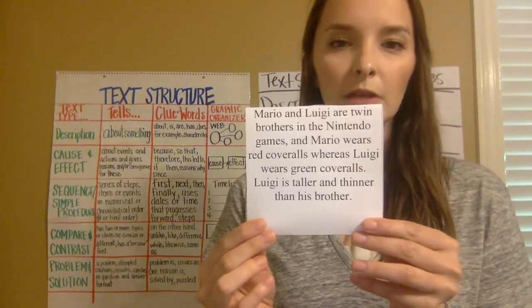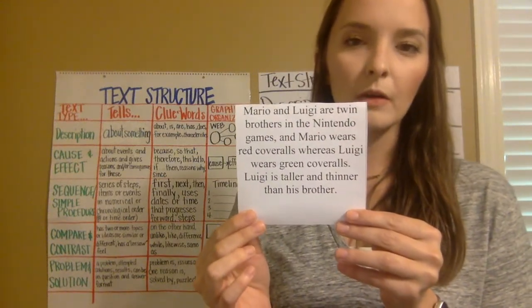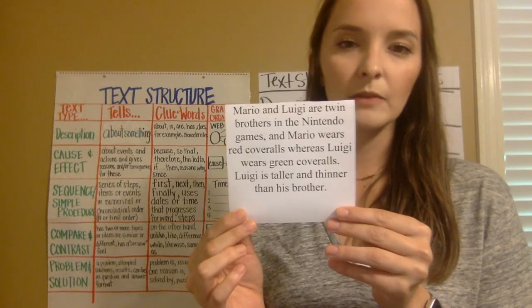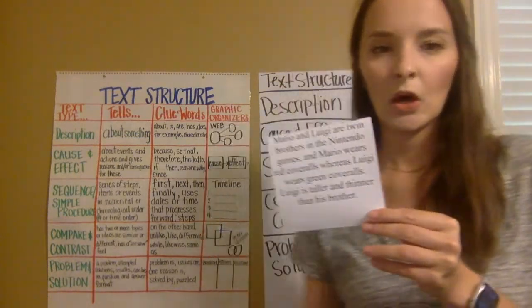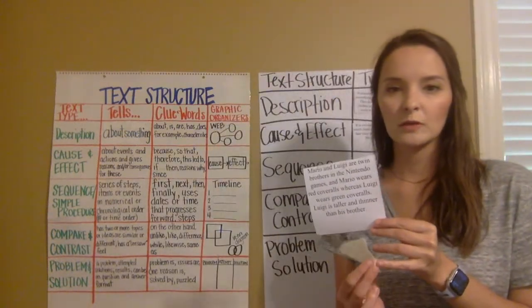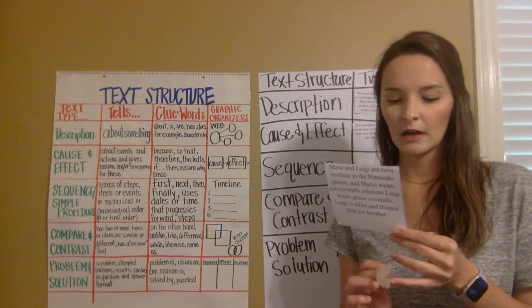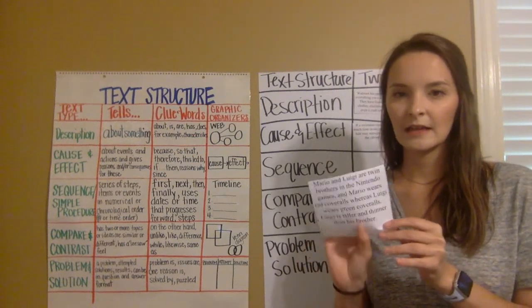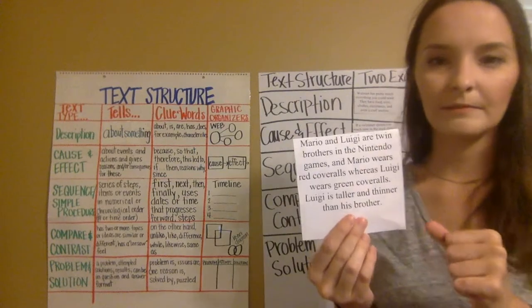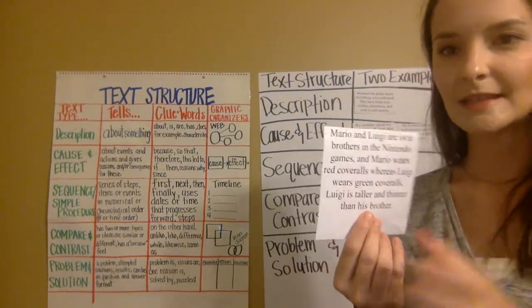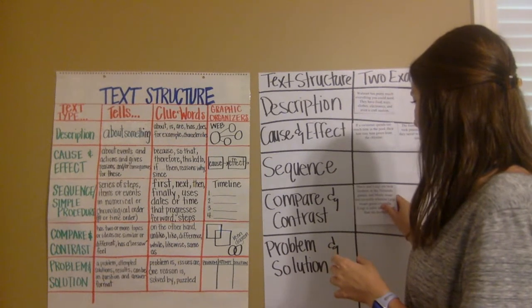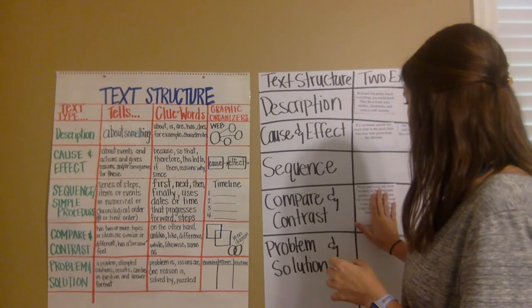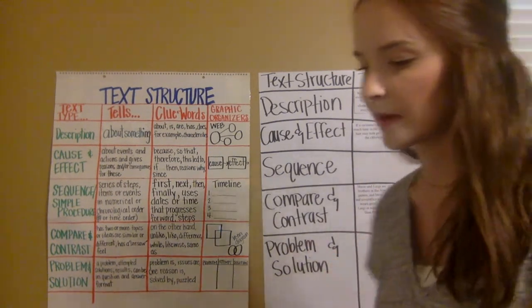Next card: Mario and Luigi are twin brothers in Nintendo games. Mario wears red coveralls, whereas Luigi wears green coveralls. Luigi is taller and thinner than his brother. When we're telling how things are alike and different, that's compare and contrast — telling us what's the same and different about Mario and Luigi.